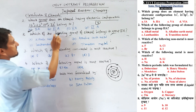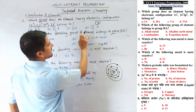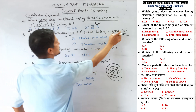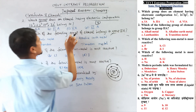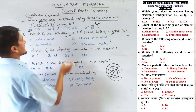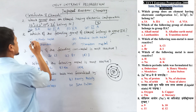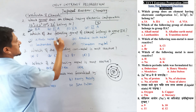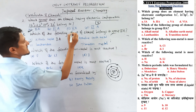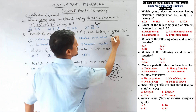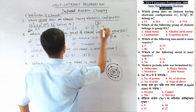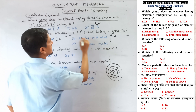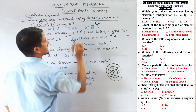Question number 2: Which of the following elements belongs to group 2A? Group 1A is the alkali metals; group 2A is the alkaline earth metals. So the correct answer is alkaline earth metal, group 2A.